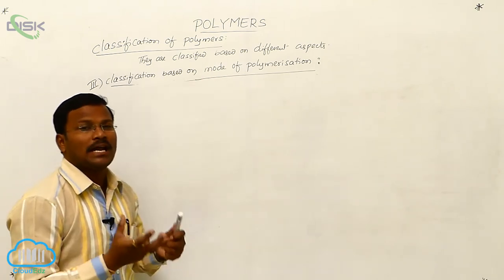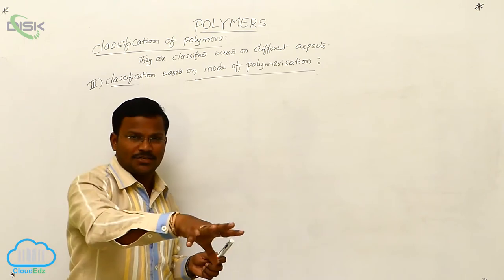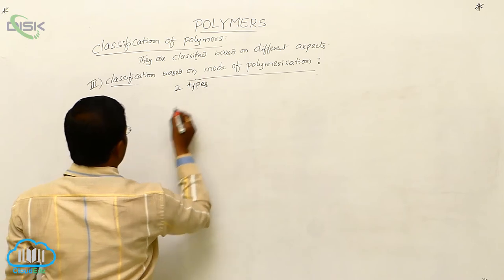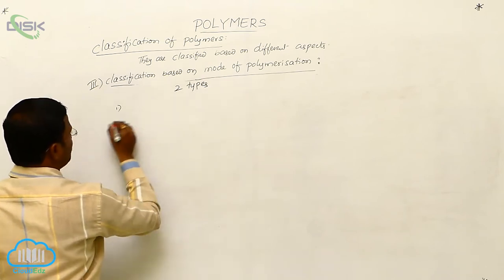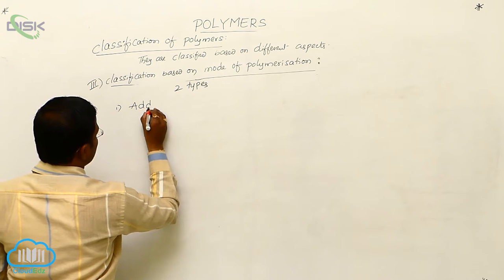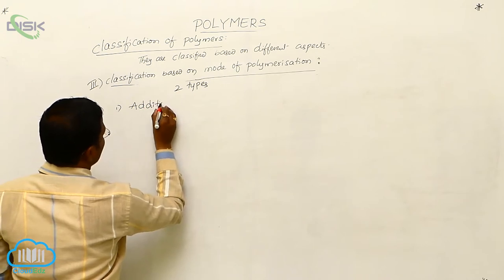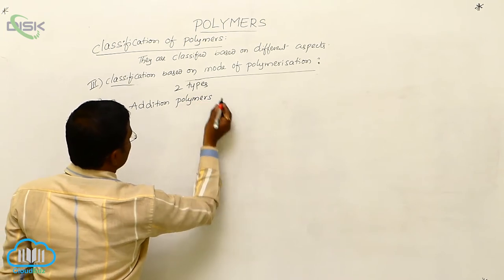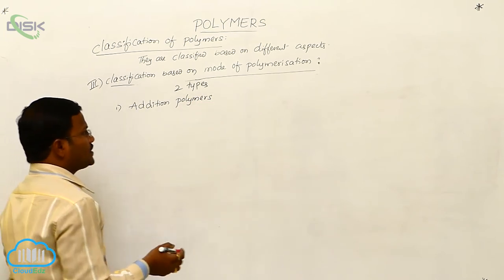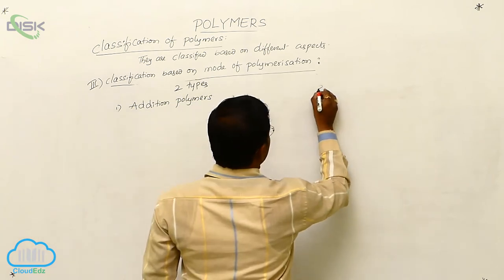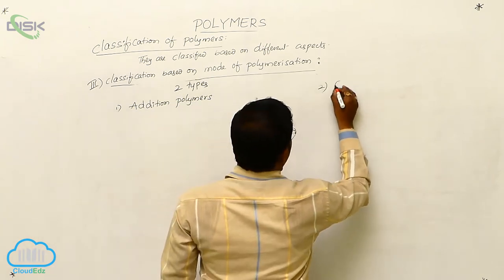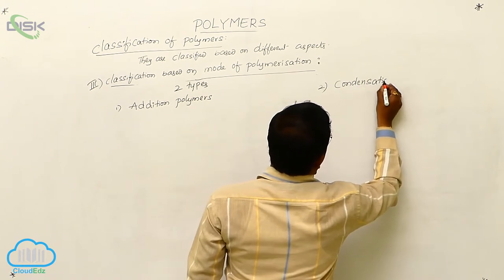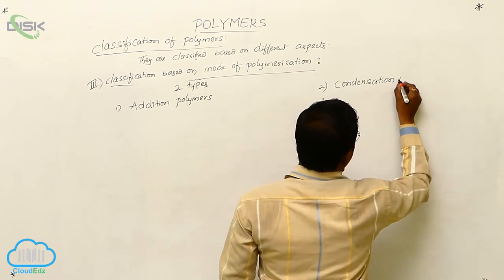We can classify polymers based on mode of polymerization into two types. They are: number one, addition polymers, and number two, condensation polymers. This is a most important synthetic classification.